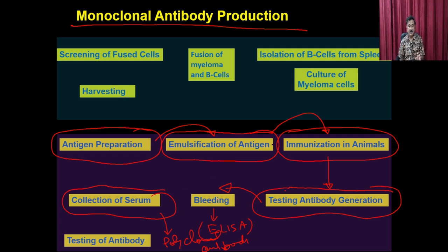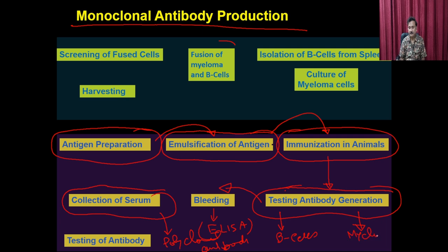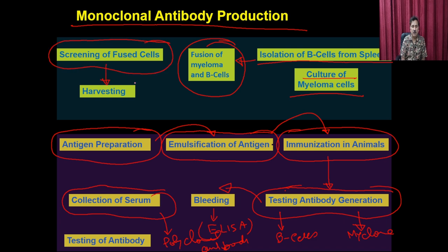Once antibody production is confirmed, you extract myeloma cells and B cells (from the spleen), then fuse them together. You isolate the B cells from the spleen, culture the myeloma cells, put them into a fusion reaction with PEG, and screen the resulting hybridomas. The harvested antibodies from these hybridoma cells are monoclonal antibodies.